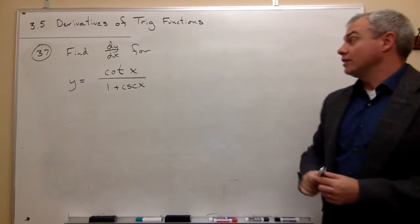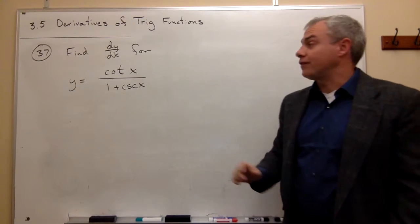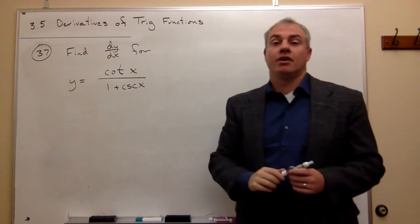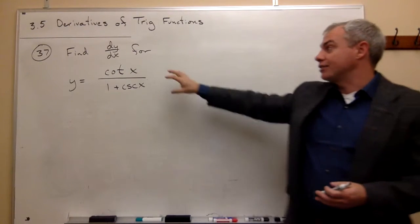If I look at this problem, first and foremost, I see that it is a quotient of two functions. There's a top function, and there's a bottom function. So if there's a quotient of two functions, then I need to use the quotient rule to take the derivative.